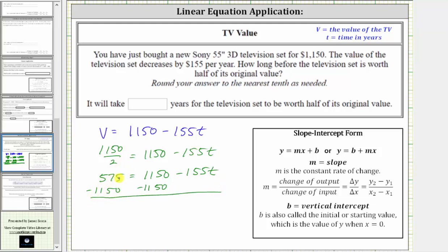Simplifying on the left, 575 minus 1,150 is negative 575. Equals on the right side, 1,150 minus 1,150 is zero, leaving us with negative 155T on the right.